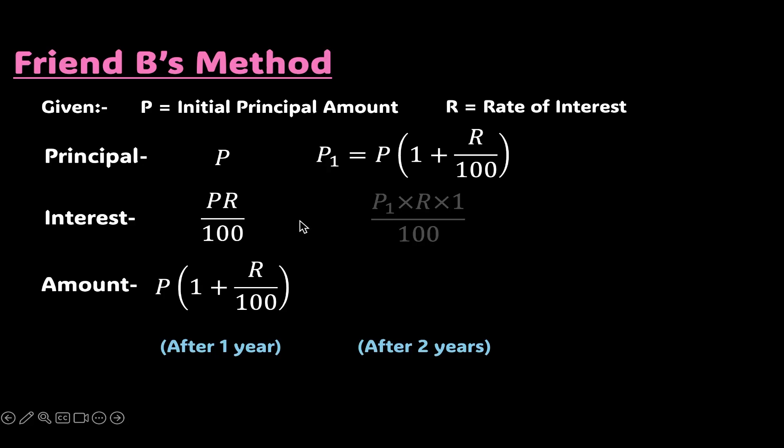The interest after two years for friend B will be P1 which is the updated principal times R times 1 upon 100 that is P1 R upon 100. You might be thinking, wait, the time period after two years must be two, right? Well, for calculating simple interest for two years directly, yes, you're absolutely right.